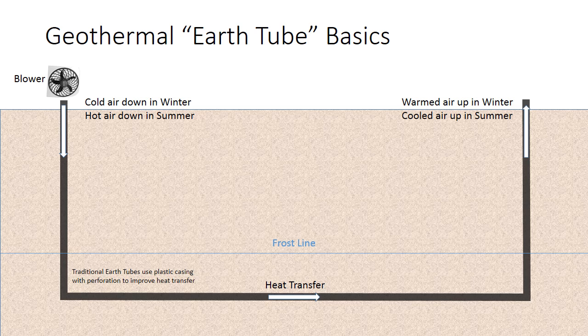In an earth tube you basically have, traditionally, four to six inch drainage pipe buried below the frost line. Typically it's as deep as a backhoe can safely dig, about four to eight feet deep.